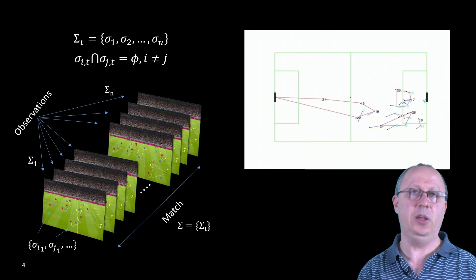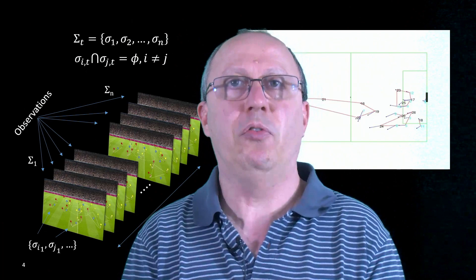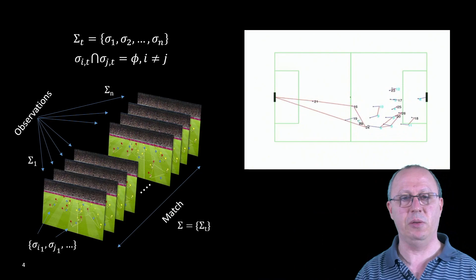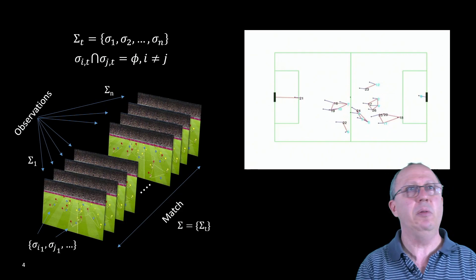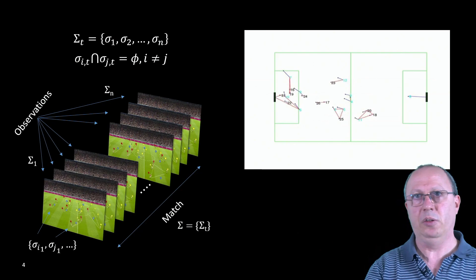Using this formalism we have been describing football matches by the hypernetwork formed at each observation. Here an observation provides the positional data of each of the players on the pitch. Using this positional data and a criteria based on proximity, we partition the players in the pitch in different subsets. A football match is thus described by the sequence of the different hypersimplexes that are formed during the entire match.